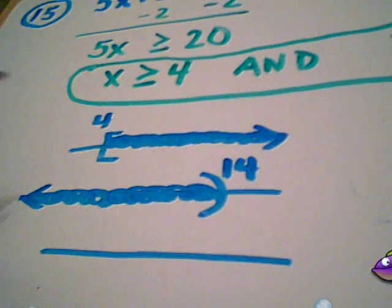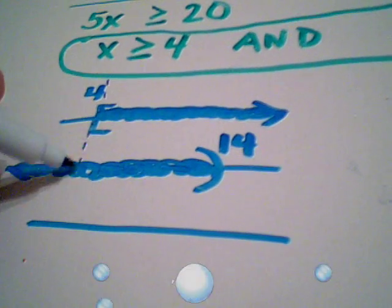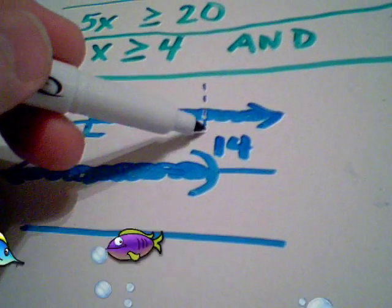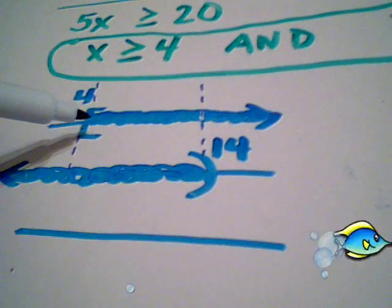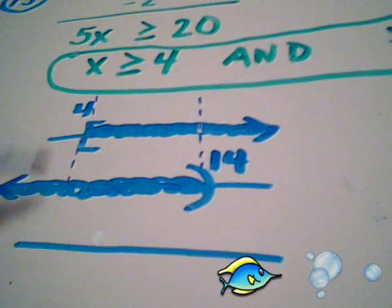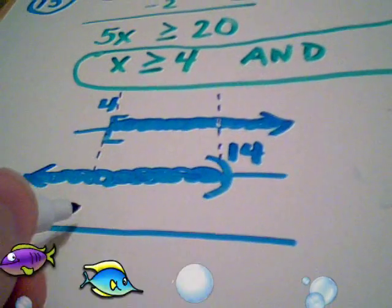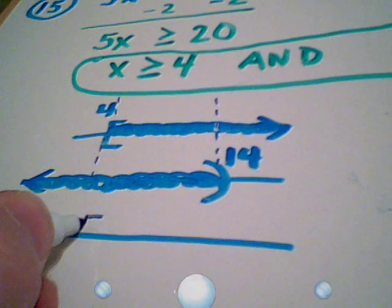And if you'll notice, I'll draw a little kind of lines to help here, between 4 and 14 these two pictures have commonality. In fact, that's the intersection of these two pictures.